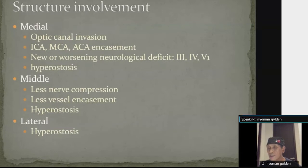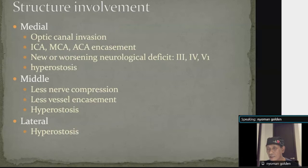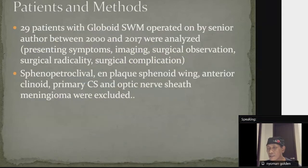Why should this group of tumors be separated? Because each location has different behavior and a different pattern of growth. In the medial group, because of their proximity to important structures such as the canal and major cerebral vessels, they have a higher rate of involving those structures than the lateral group. When the tumor originates more laterally, there will be less compression of these important structures.